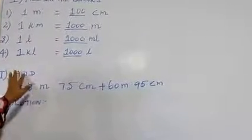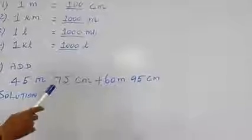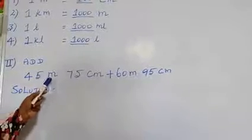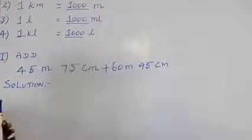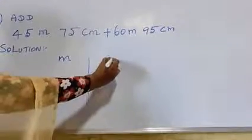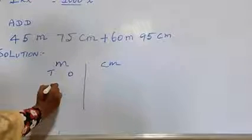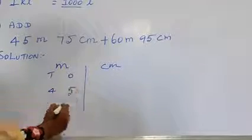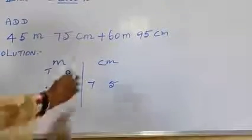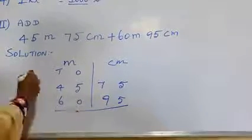Next heading is add. What's our problem? 45 meter 75 cm plus 60 meter 95 cm. Listen children, here we have 2 units: meter and cm. So we first plan to divide the column meter and cm. Then the first way we have 45 meters, 75 cm. Then the next 60 meters and 95 cm. So we need to add.